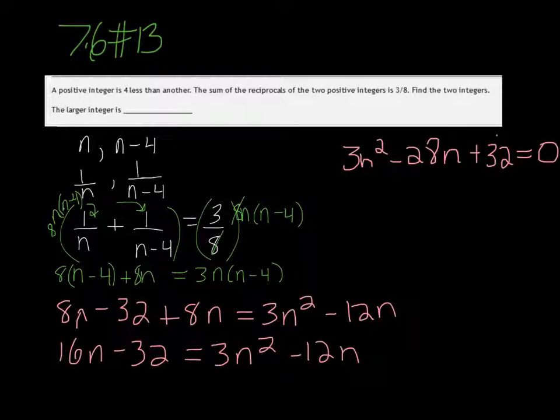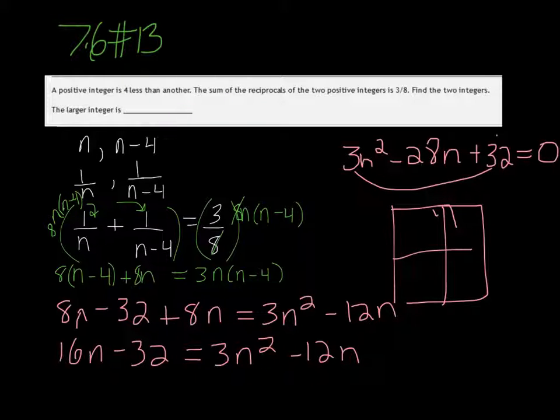Well, the only way we know to solve quadratics right now is to factor it. Okay, so 3 times 32. Let's draw our box. And we have 3n squared in one corner and 32 in the other.